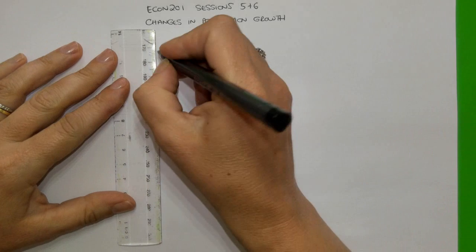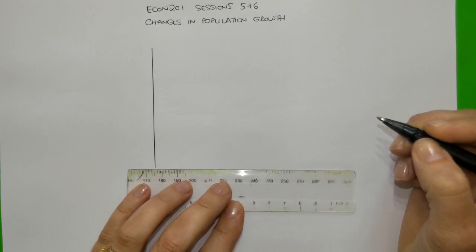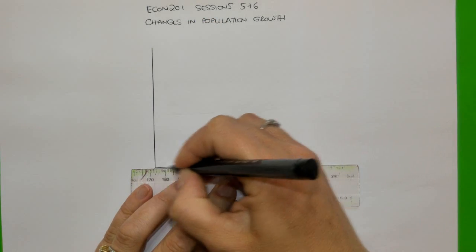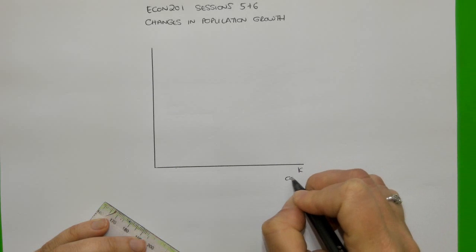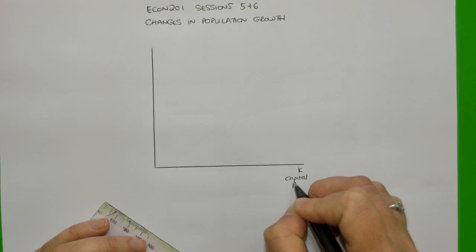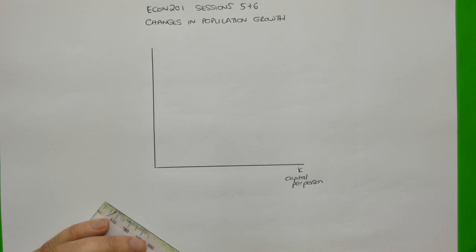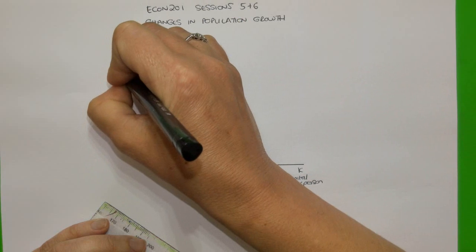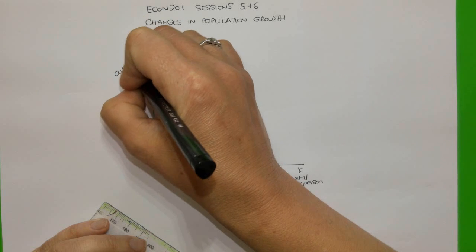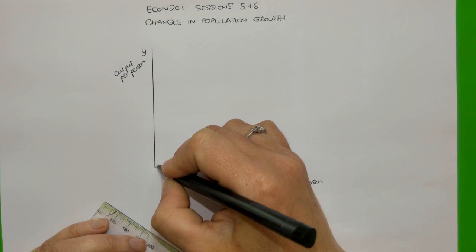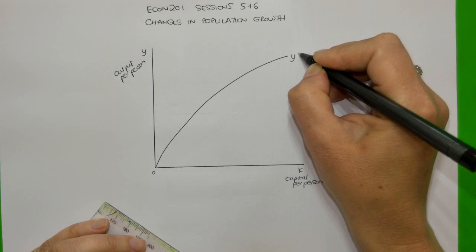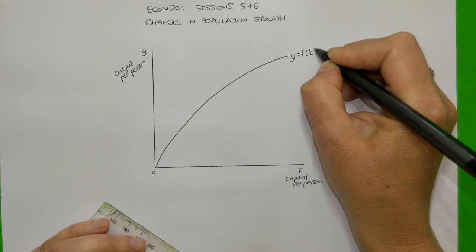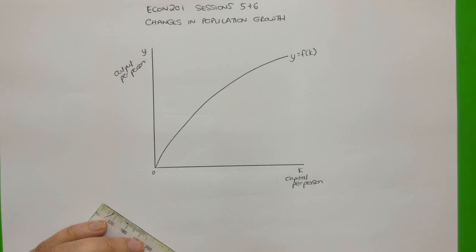I am going to draw the standard neoclassical growth theory model. We draw our axes — remember always to label the axes. Capital per person is on the horizontal axis and output per person is on the vertical axis. We draw in the production function, which is positively sloped but concave because of diminishing marginal returns. So as capital per person increases, output per person increases at a decreasing rate.